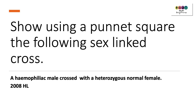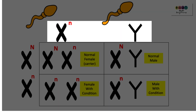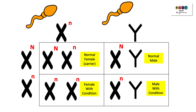Let's take a look at the 2008 Higher Level question — the old questions are generally really worth your while going over. A haemophiliac male was crossed with a heterozygous normal female. It's always worth doing a Punnett square to help yourself. Start with the sex chromosomes: XX for a female and XY for the male. The male has haemophilia, so he's XY and because he has haemophilia we give him a small n.